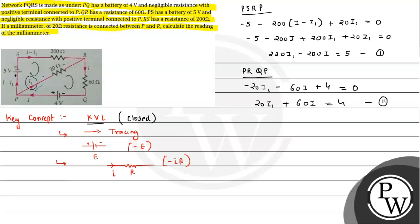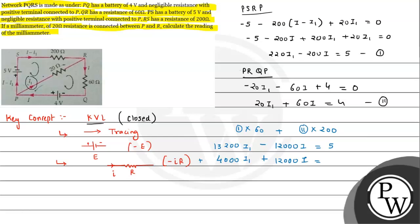To get the value of I1, we multiply expression 1 by 60 and expression 2 by 200. Multiplying expression 1 by 60 gives 13,200 I1 minus 12,000 I equals 300. Multiplying expression 2 by 200 gives 4,000 I1 plus 12,000 I equals 800.